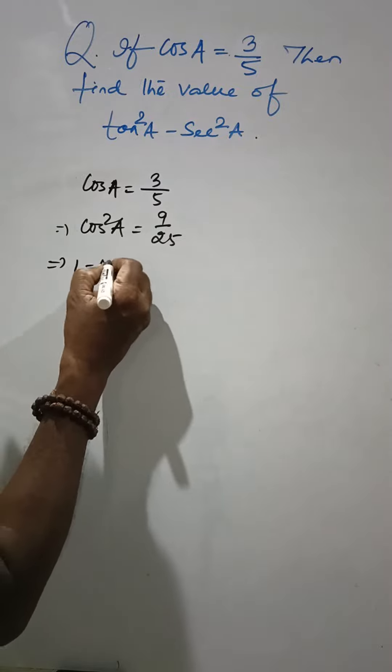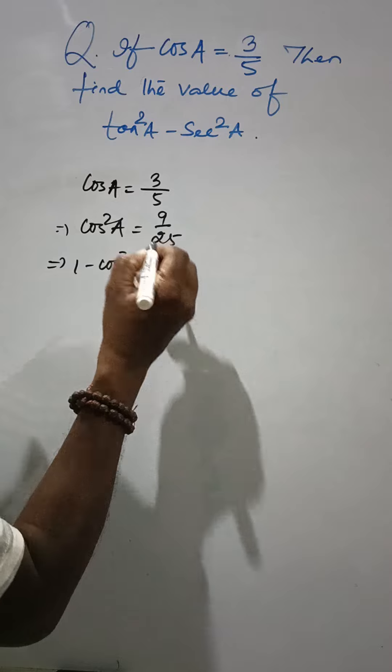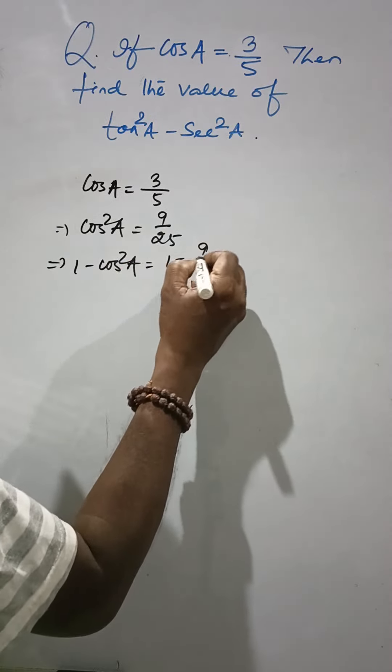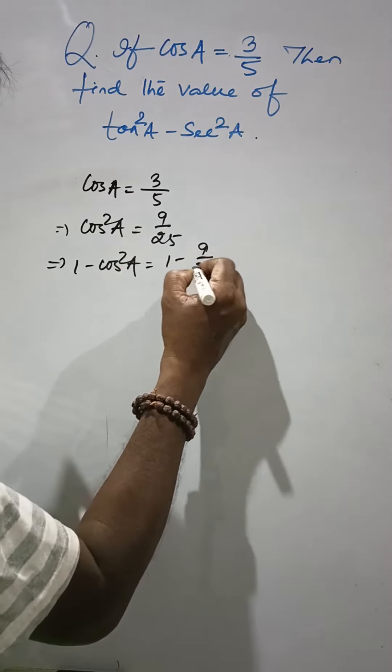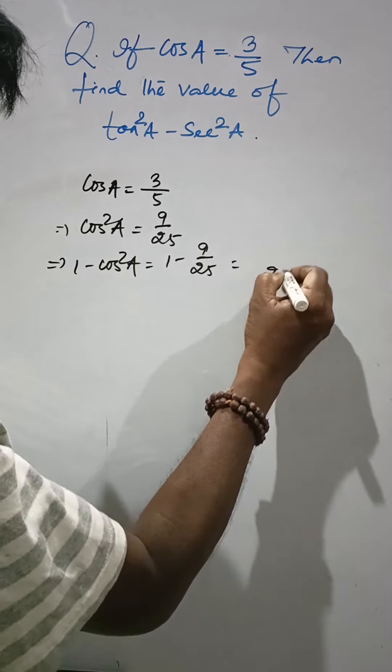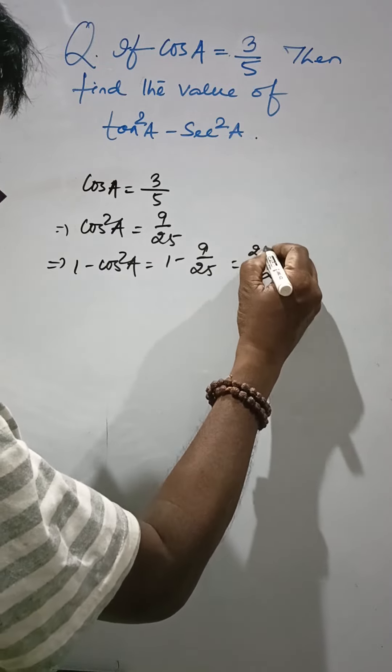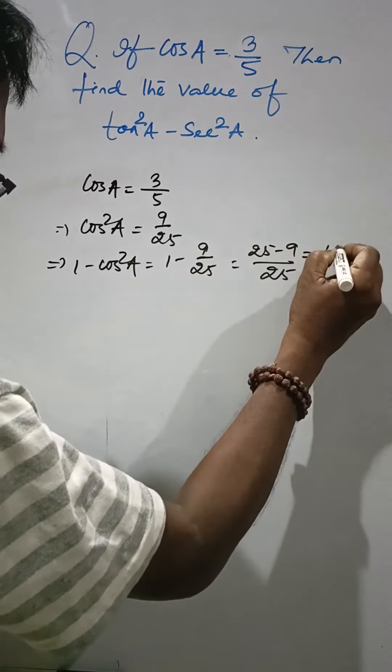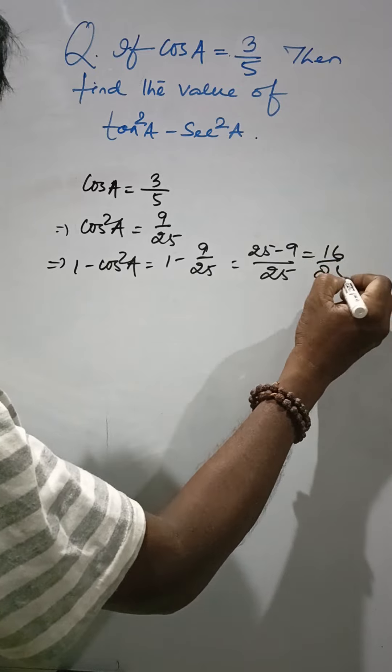1 minus cos square A is equal to 1 minus 9 divided by 25. 25 minus 9, that is 16 by 25.